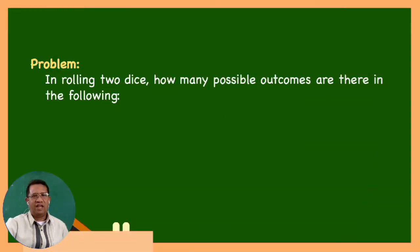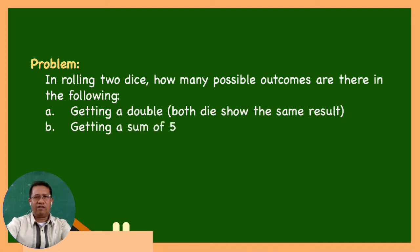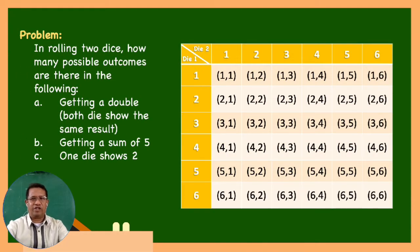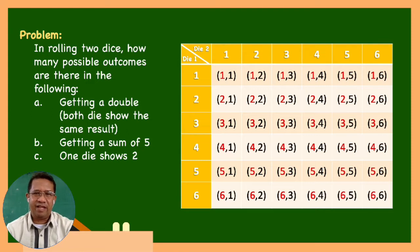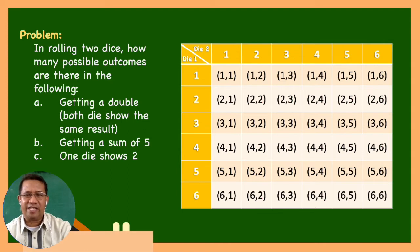In rolling two dice, how many possible outcomes are there in the following? A: Getting a double — meaning both dice show the same result. B: Getting a sum of 5. C: One die shows 2. To answer this, we construct a table. The first column illustrates the faces of die number 1, and the first row is die number 2. The first element of the pair represents the outcome for die 1, and the second element for die 2.